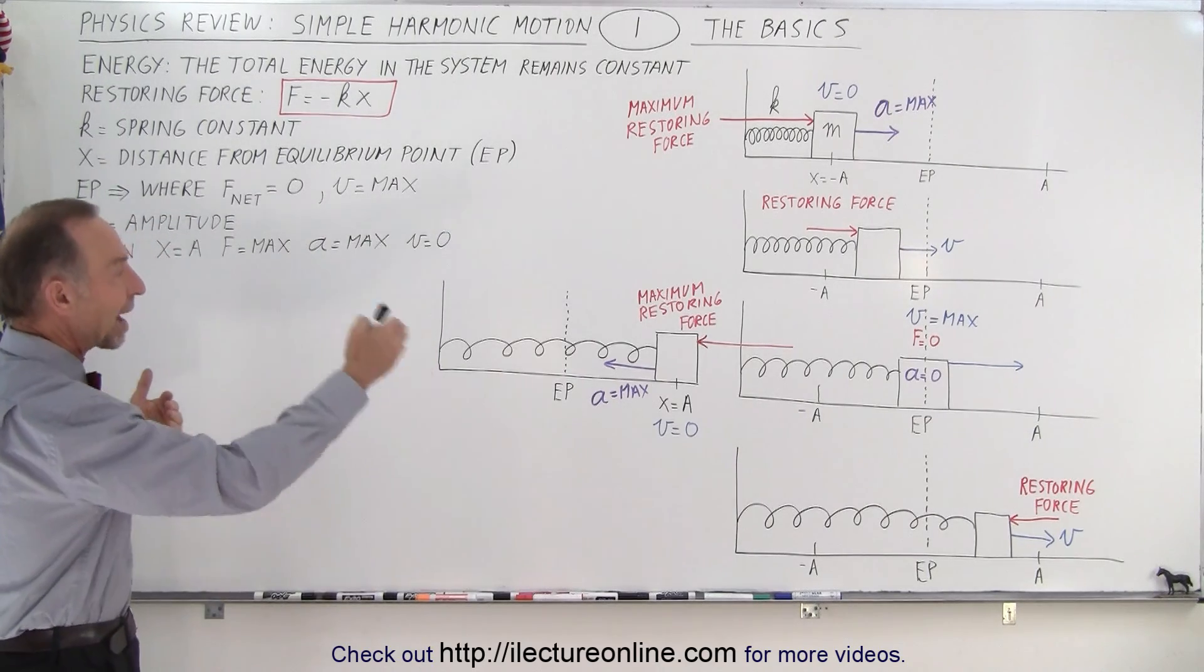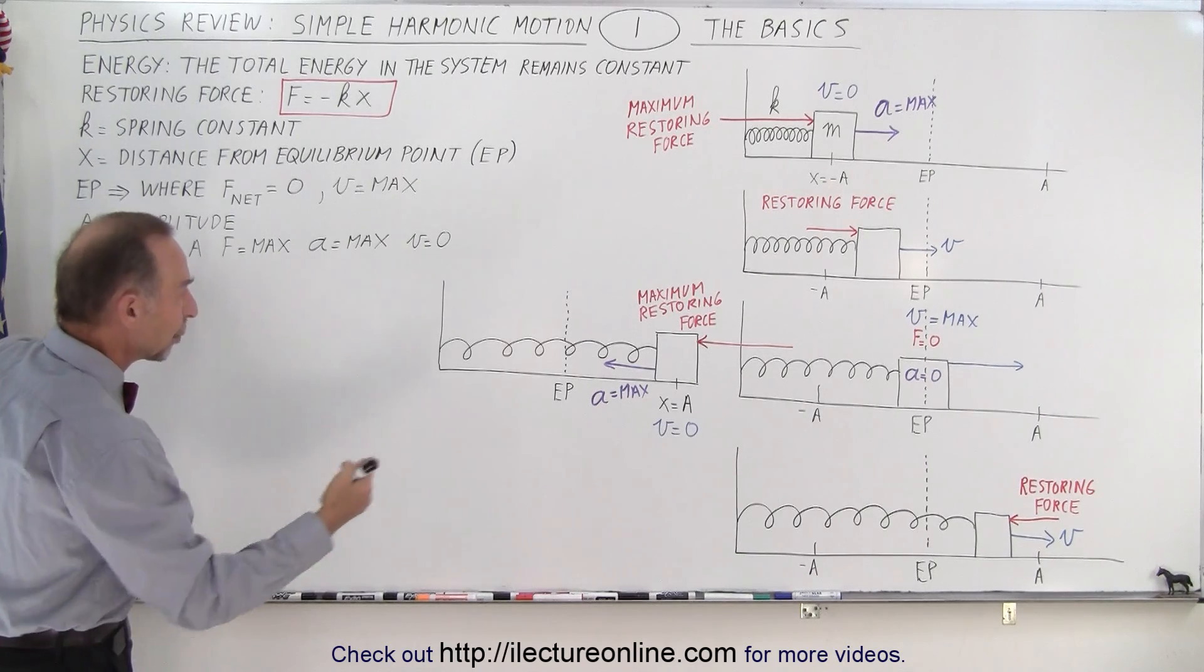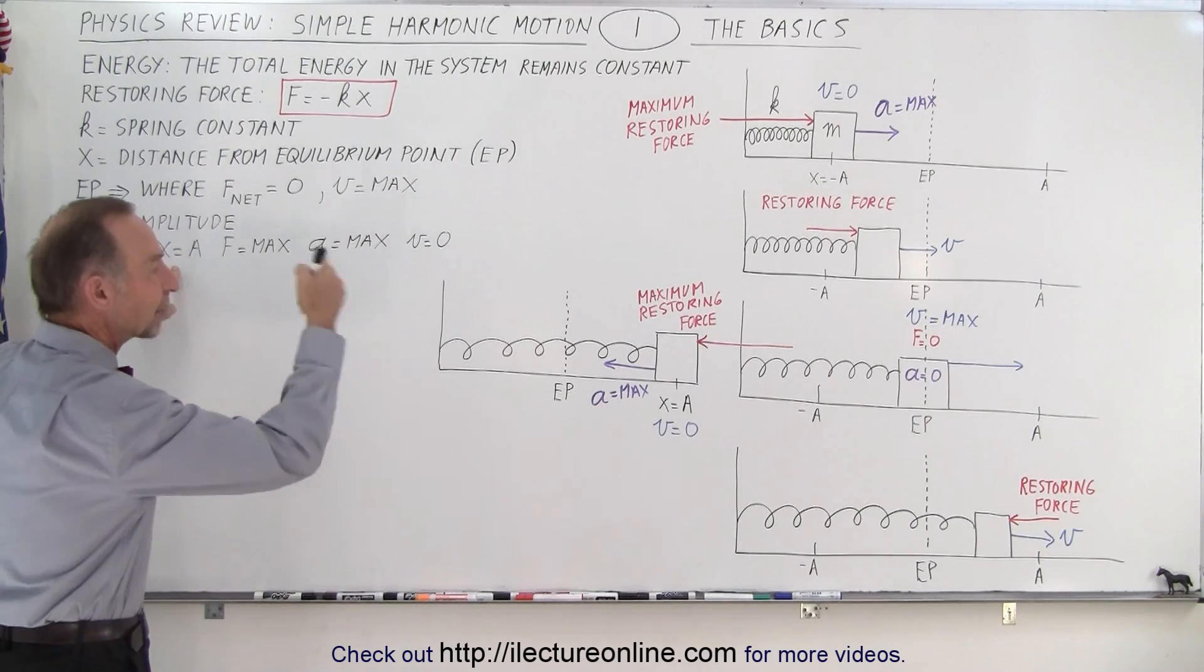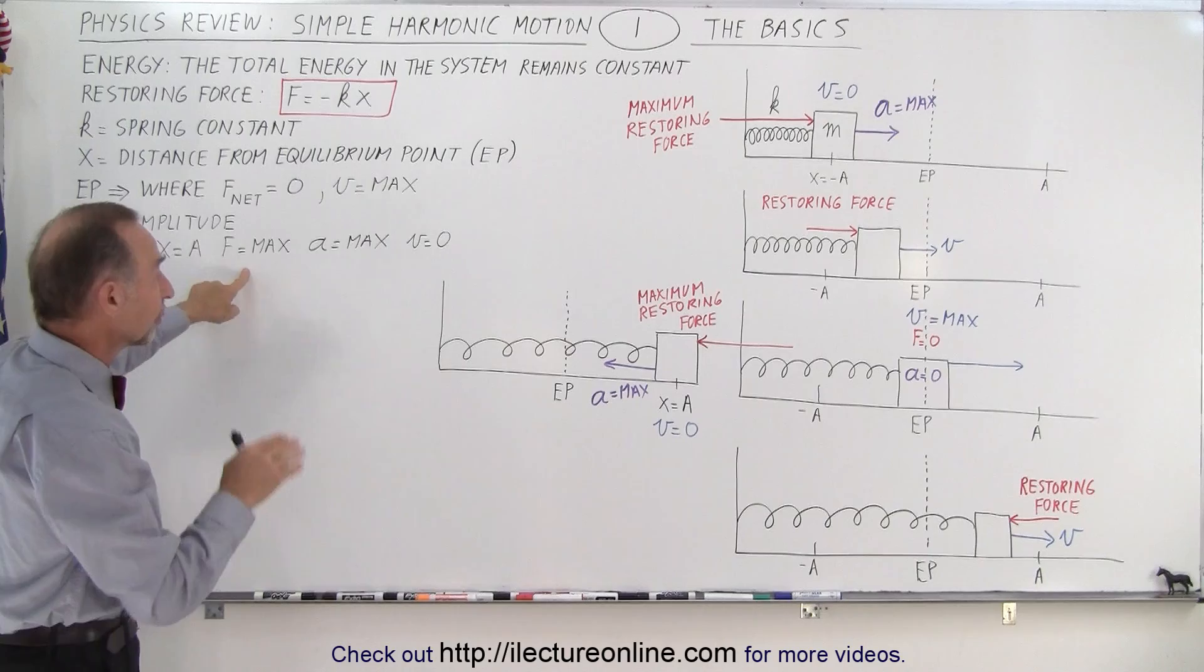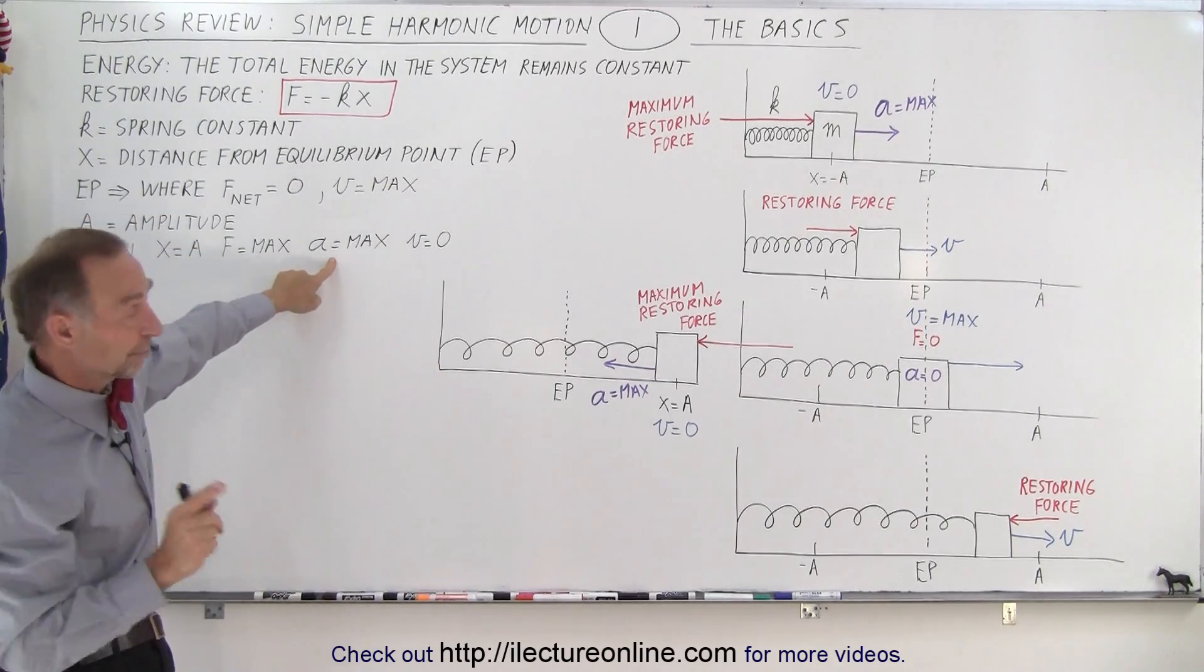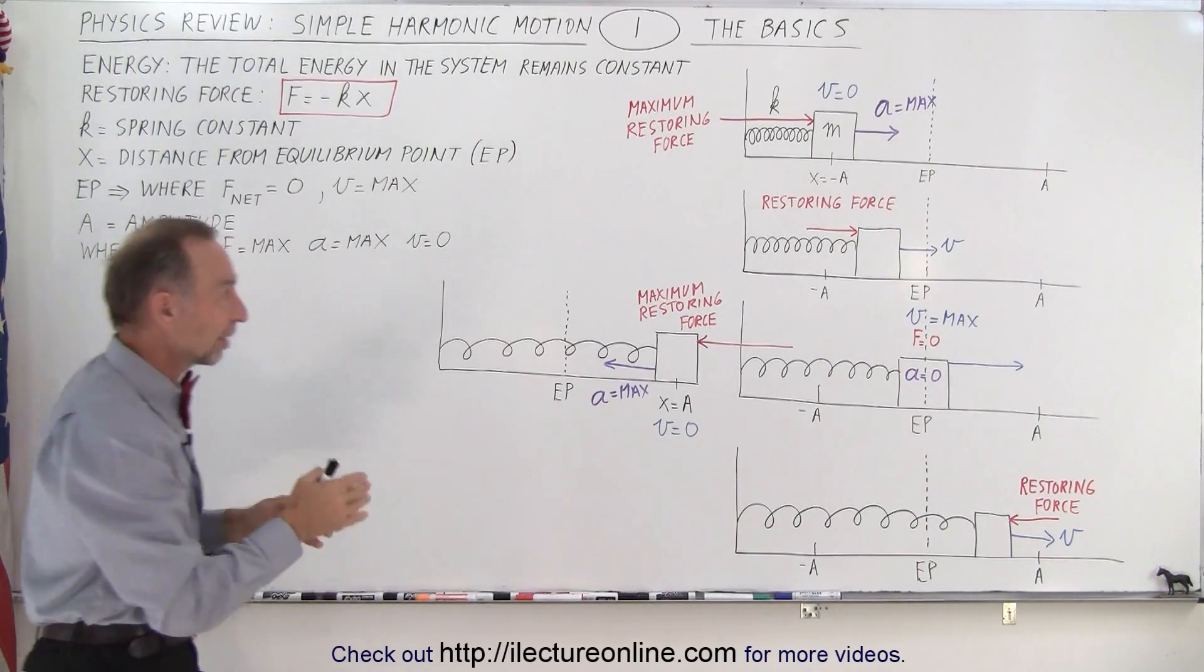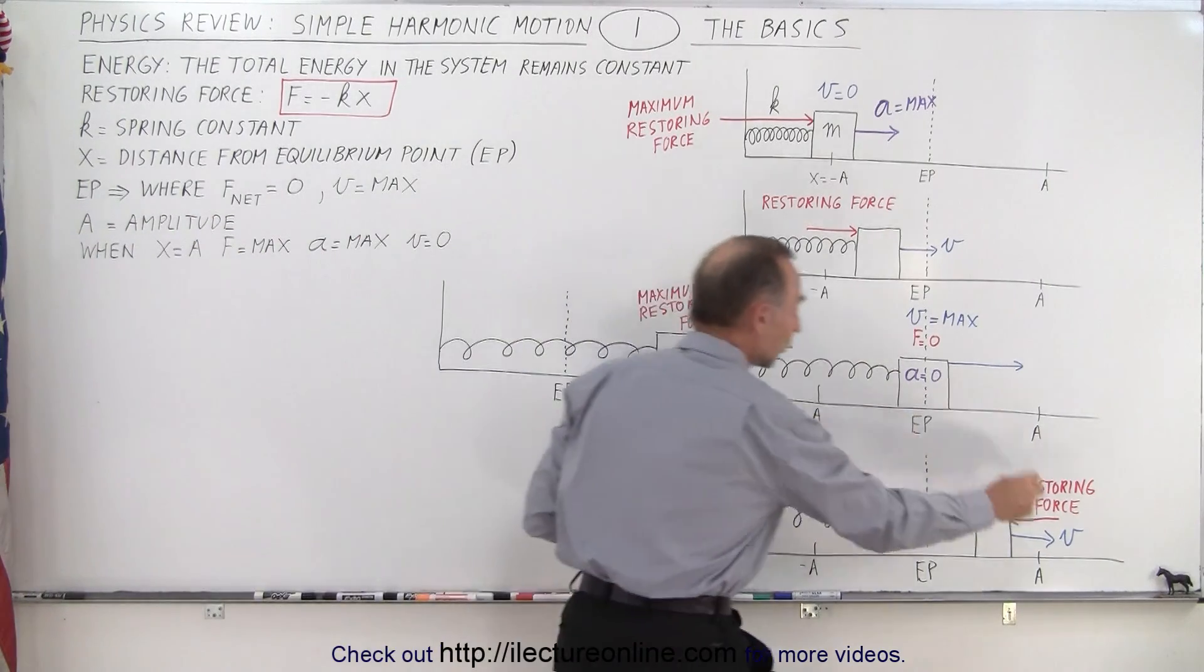A is known as the amplitude, which is the maximum distance away from the equilibrium point. When X equals A, when the object is at the maximum distance from equilibrium, the restoring force is at maximum, the acceleration is at maximum, and the velocity at that point will be zero because that's when the object has reached its farthest point.